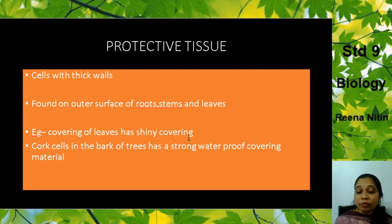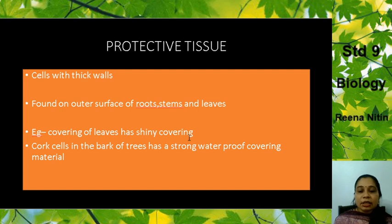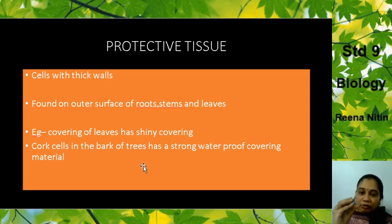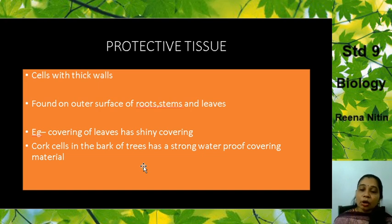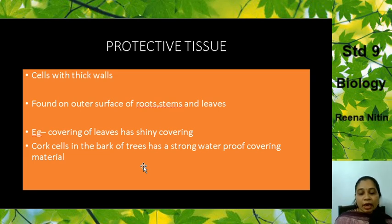For example, the covering of leaves has a shiny covering. All of you have seen leaves in your garden — when they are fresh they obviously have a shiny covering. This is the protective tissue in the leaf. Cork cells in the barks of trees have a strong waterproof covering material. That is a hard woody covering of the trees. It should not get wet or absorb water, so it has a waterproof covering material. This is the first type — protective tissue — its main function is protection of the plant.